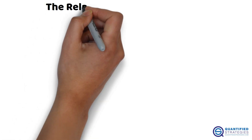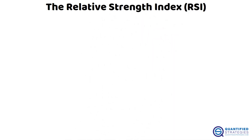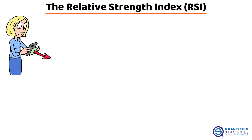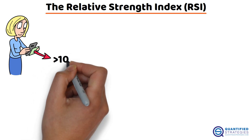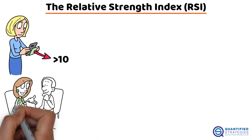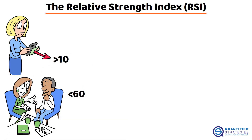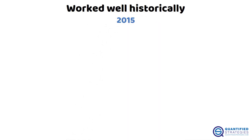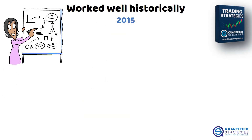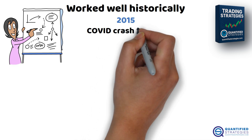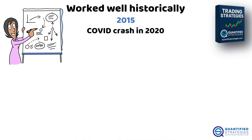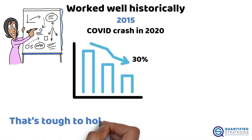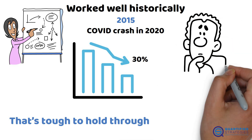First up, the Relative Strength Index (RSI). Our setup buys when the two-day RSI drops below 10 and sells when it moves above 60. It worked well historically, but since 2015 the strategy has struggled. During the COVID crash in 2020, the drawdown hit 30% — that's tough to hold through, and most traders would likely abandon it.